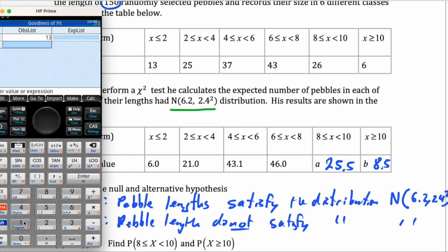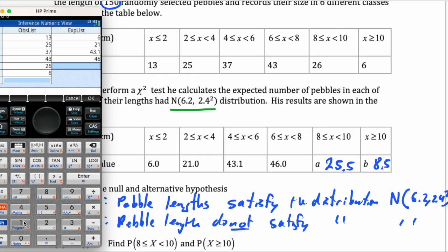13, 25, 37, 43, 26, 6, and the expected values are 6, 21, 43.1, 46, 25.5, 8.5.